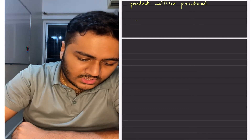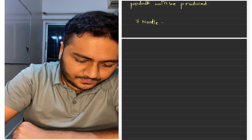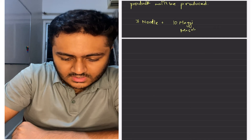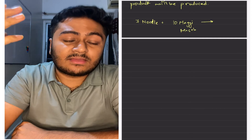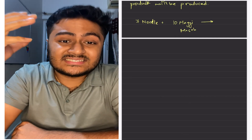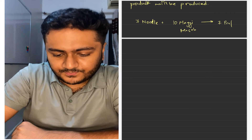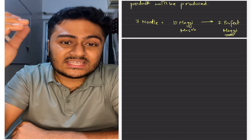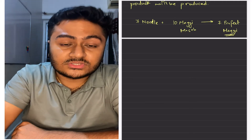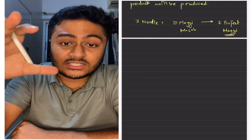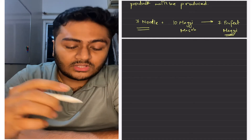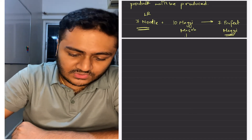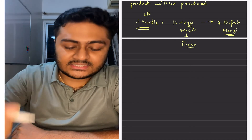In the second case I give you seven noodles but I give you ten maggie masalas. So in this case how many perfect maggies can be produced? Obviously seven perfect maggies will be produced. Therefore the item which is in less quantity — the noodle — dictates how much product is produced. The noodle will be the limiting reagent, and the maggie masala, which is in excess, will be known as the excess reagent.